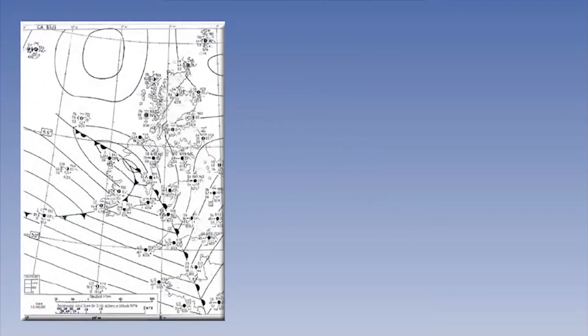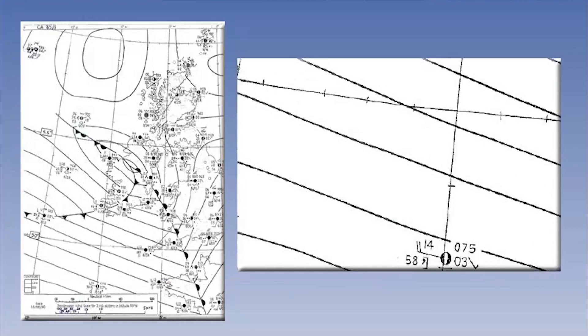If we now take a surface pressure chart like the one shown here, we can see some parallel isobars and therefore find a geostrophic wind. Remember, the direction is found by using Buys Ballot's Law.